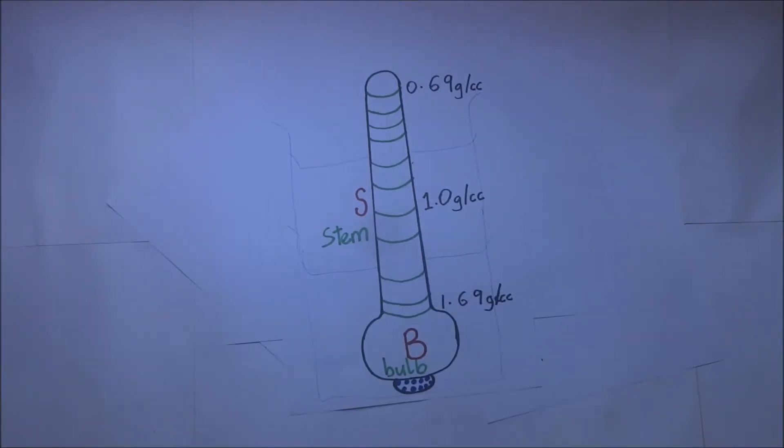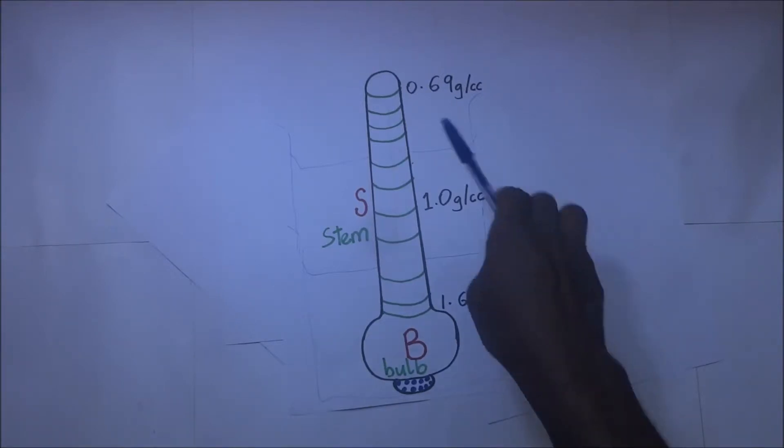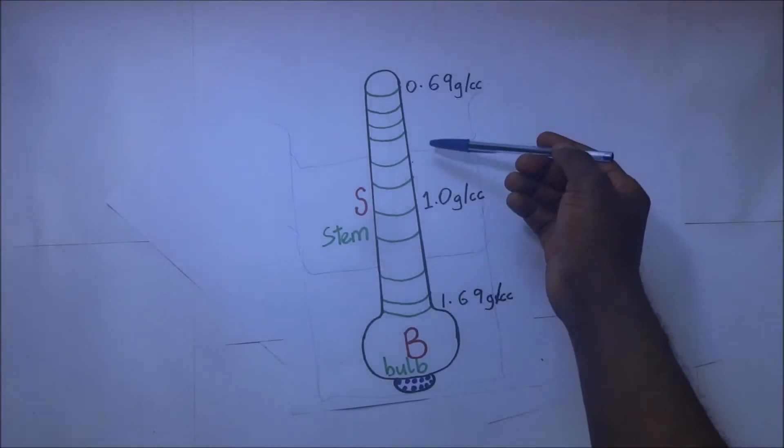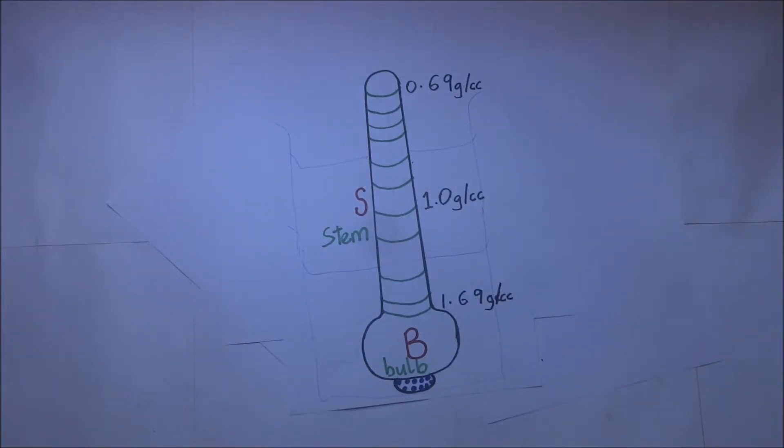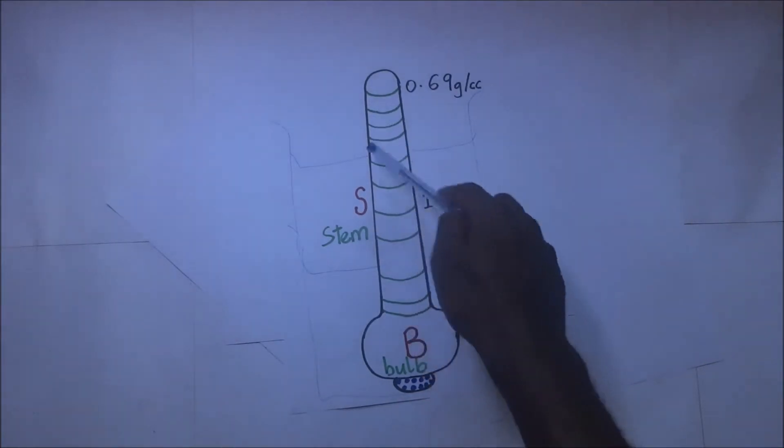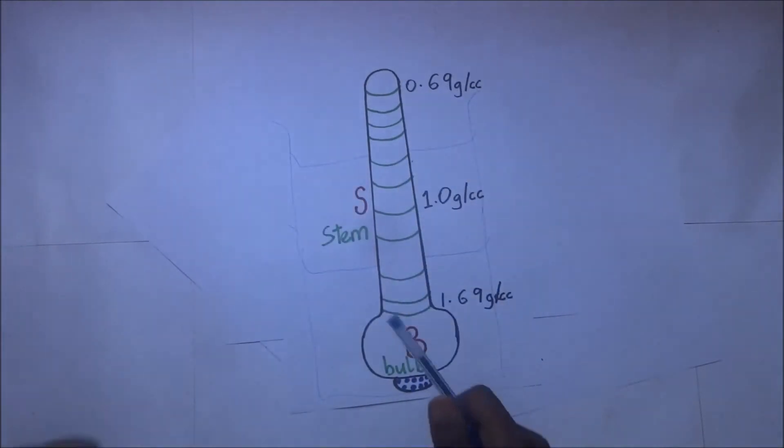That is why the divisions in the stem start from the top with 0.69 and gradually increase up to the bottom with 1.69. The graduations are not uniform, since the stem is also not uniform.